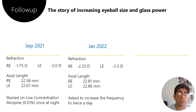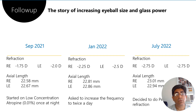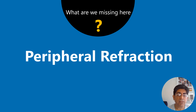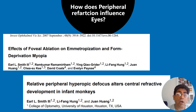We followed the child in January 2021 and July 2022. At that point, the axial length was still increasing, so we thought we were missing something. That led us to think of doing a peripheral refraction. We should first understand how peripheral refraction influences the eyes.